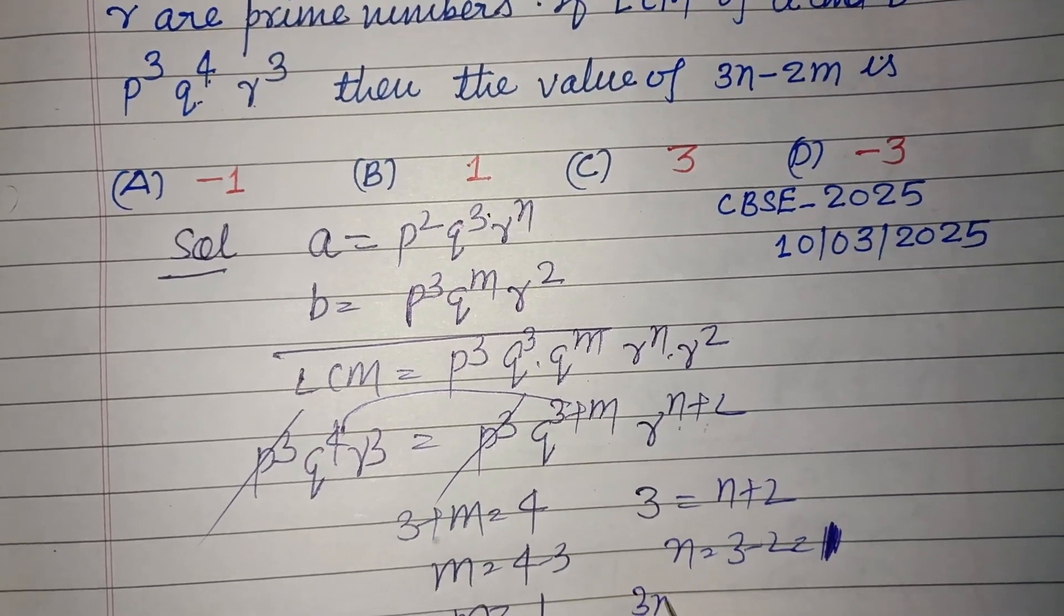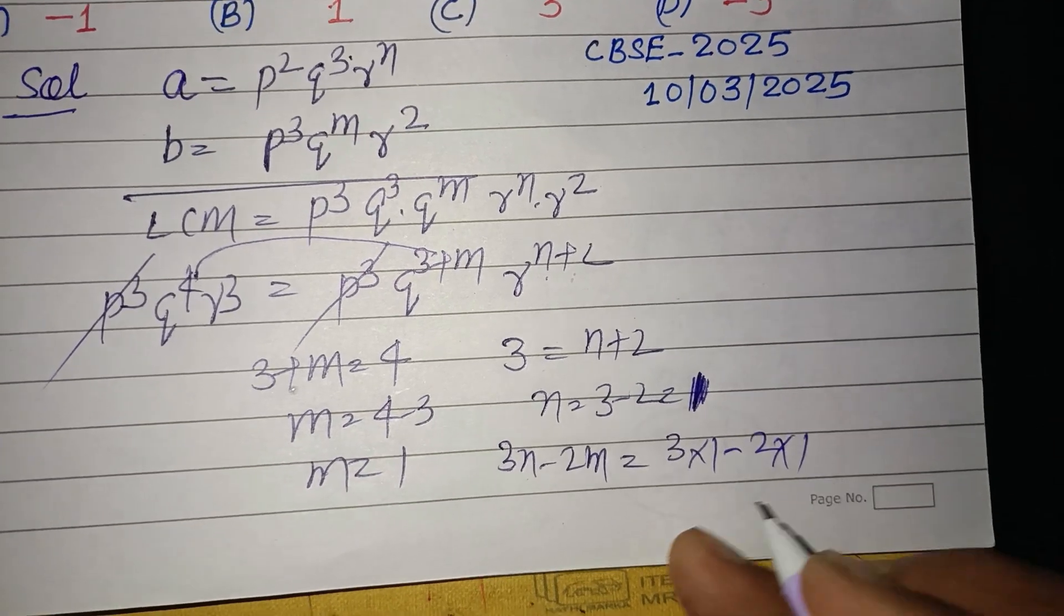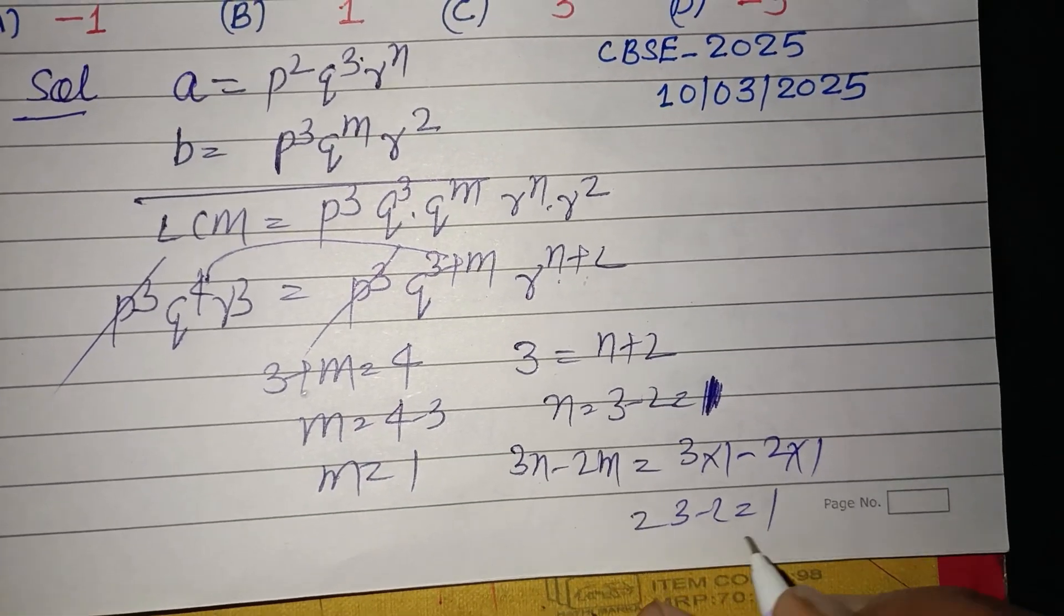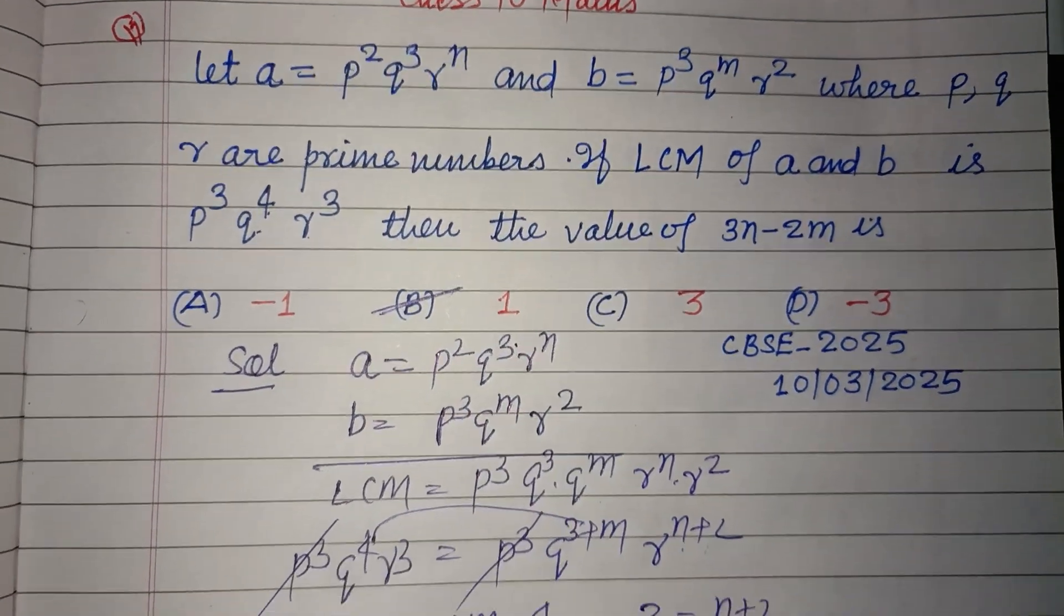And question is asking us 3n minus 2m, so 3 into 1 minus 2 into 1, that is 3 minus 2, that is 1. So 1 is the correct answer to this question, which is found in option B.